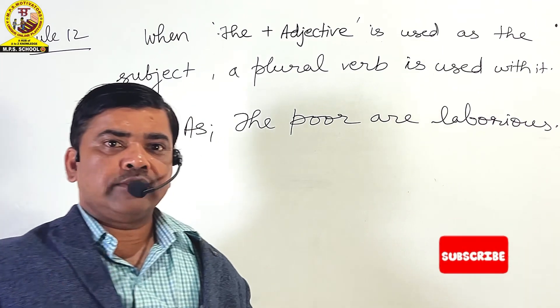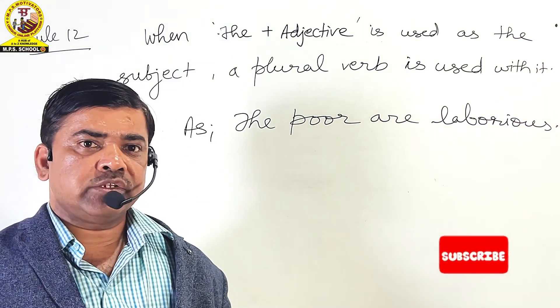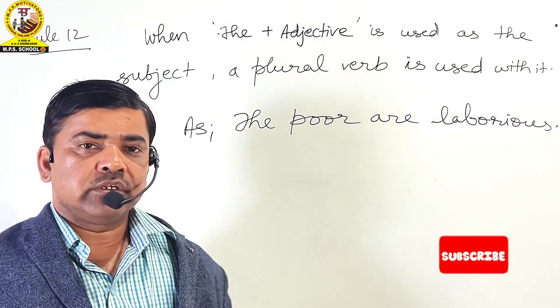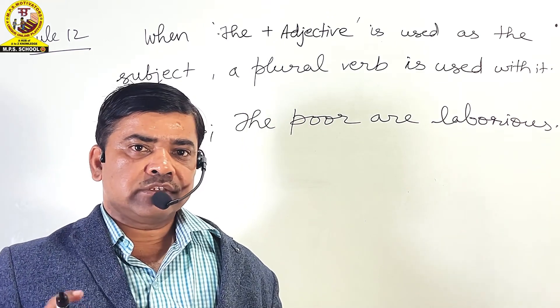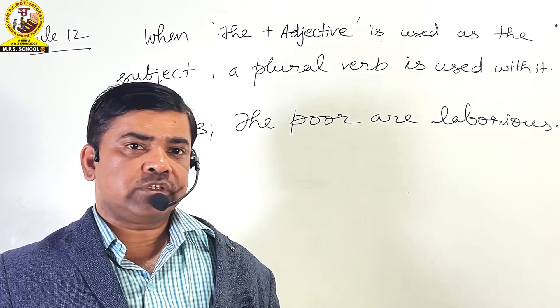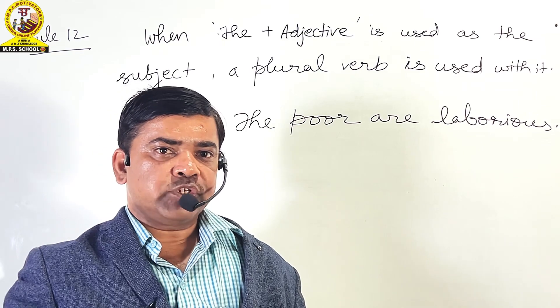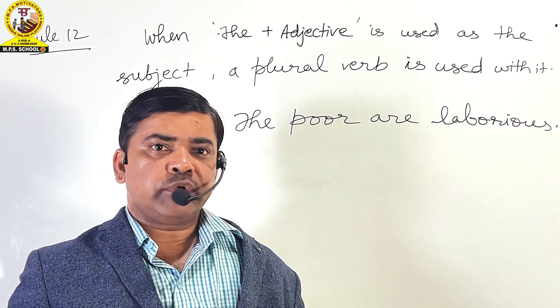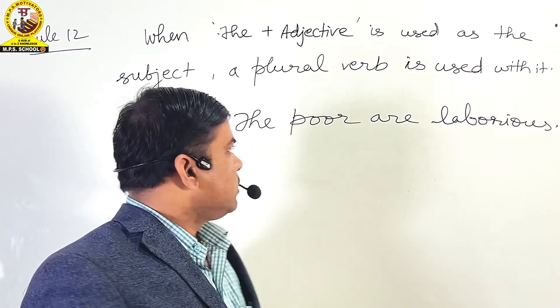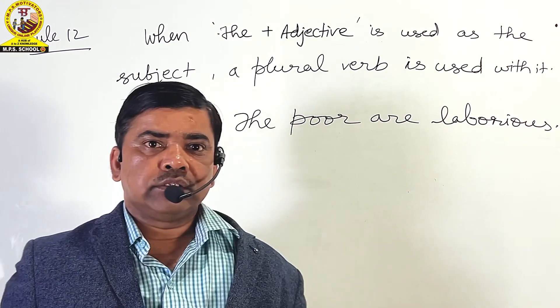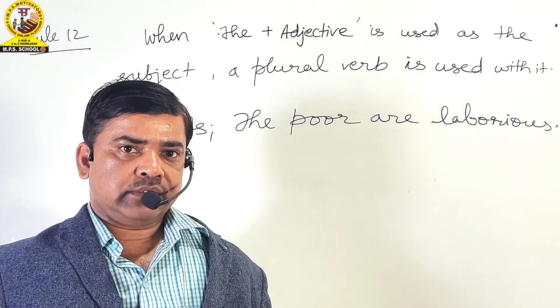The 12th rule of subject-verb agreement is that when 'the' plus an adjective is used as the subject, a plural verb is used with it, as we treat this combination as a plural countable noun. For example: 'The poor are laborious.'